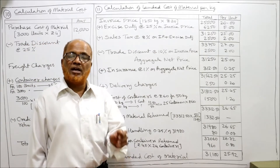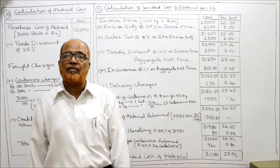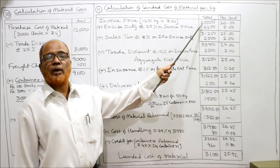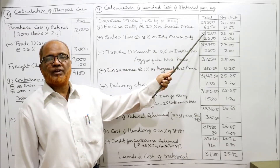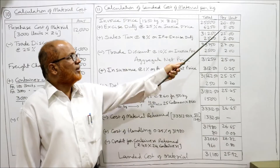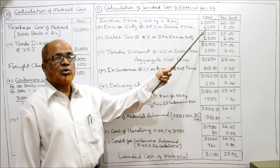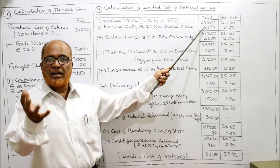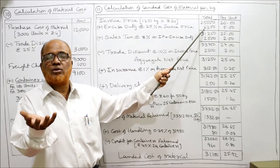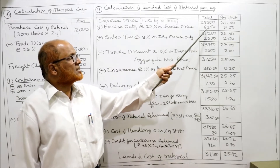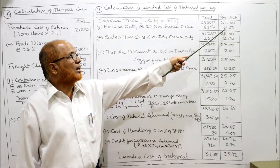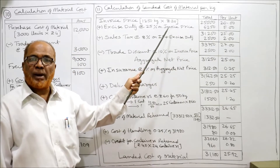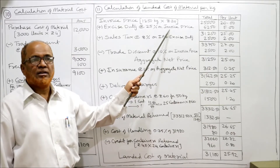To this we add excise duty, which is 25% of invoice price. So 25% of 25,000 = 6,250 rupees. Per kilogram: 6,250 ÷ 1250 = 5 rupees per kilogram. Adding invoice price and excise duty gives a total of 31,250 rupees and 25 rupees per kilogram.